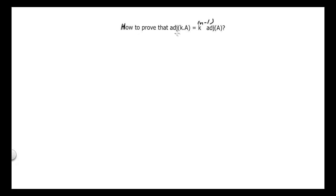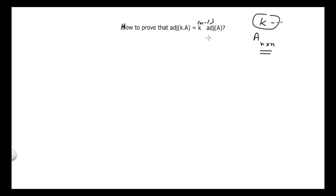In this video we will cover how to prove that adjoint of k times matrix A is equal to k to the power n minus 1 times adjoint of matrix A. Let's suppose that A is a square matrix of order n cross n, and k is any scalar quantity — it can be 2, or 2 divided by 3, or any scalar — and we want to prove that adjoint of matrix kA is equal to k^(n-1) times adjoint of matrix A.